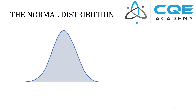Andy Robertson here with CQE Academy. Today I want to talk about the normal distribution and cover some of the foundational principles, including how to calculate probability. The normal distribution is probably the most important probability distribution in statistics. A lot of data out there follows the normal distribution, and as it relates to quality engineering, a lot of the complex methods and tools that we use are based on the normal distribution.